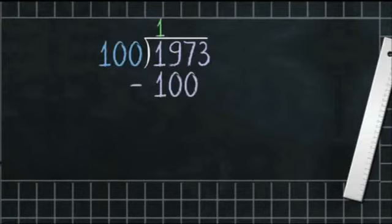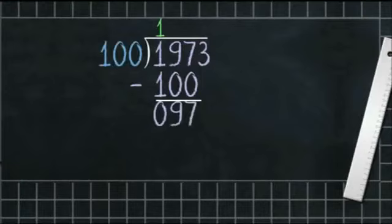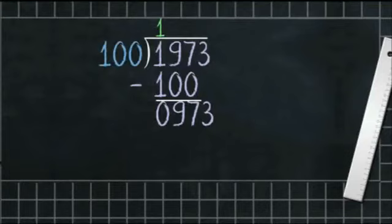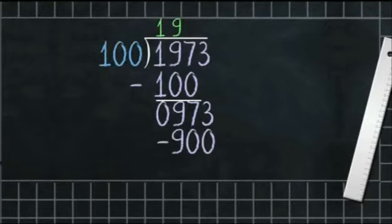We subtract 100 from 197: 7 minus 0 is 7, 9 minus 0 is 9, 1 minus 1 is 0, giving 97. We bring down 3 beside 97, making 973. We divide 973 by 100 — it goes 9 times, that is 100 × 9 = 900. We subtract 900 from 973: 3 minus 0 is 3.